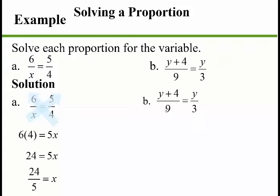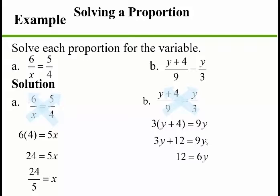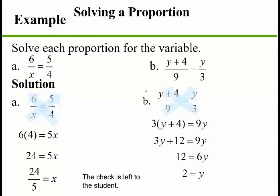For part b, same process — cross-multiply: 3 times (y + 4) equals 9 times y. Distribute: 3y + 12 equals 9y. Subtract 3y to get 12 equals 6y, then divide by 6 to get y equals 2. You can verify by plugging these values back in — if you substitute y = 2 and x = 24/5 into the original proportions and simplify, you'll get equivalent fractions.